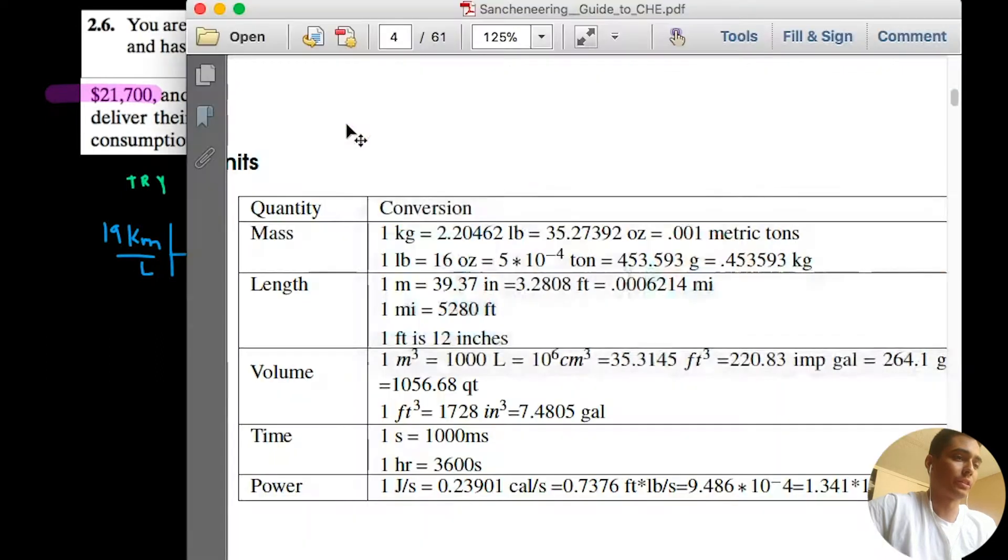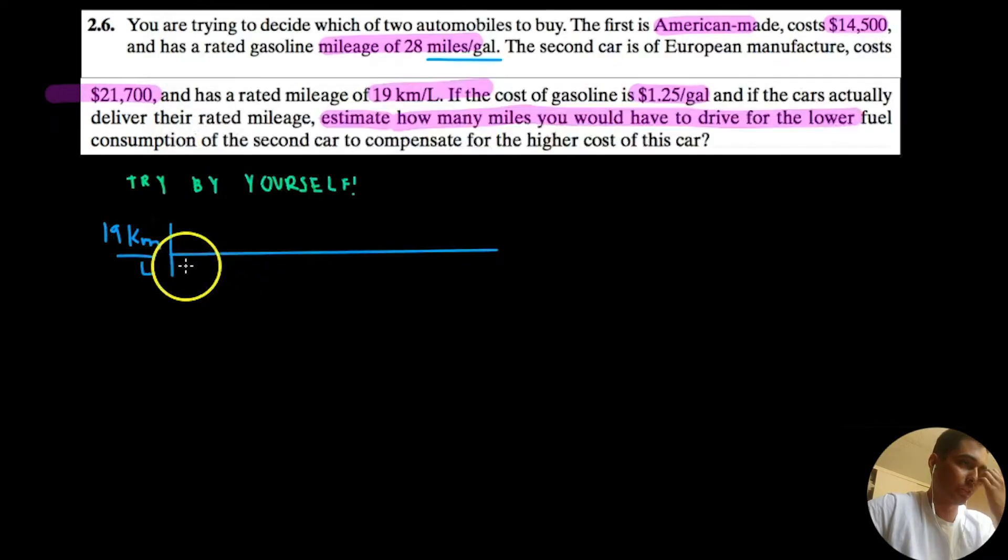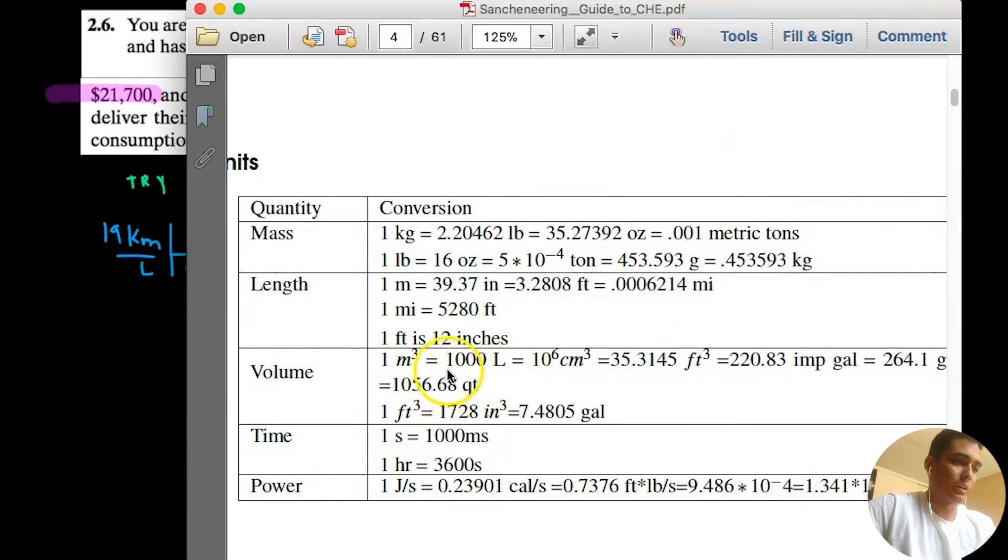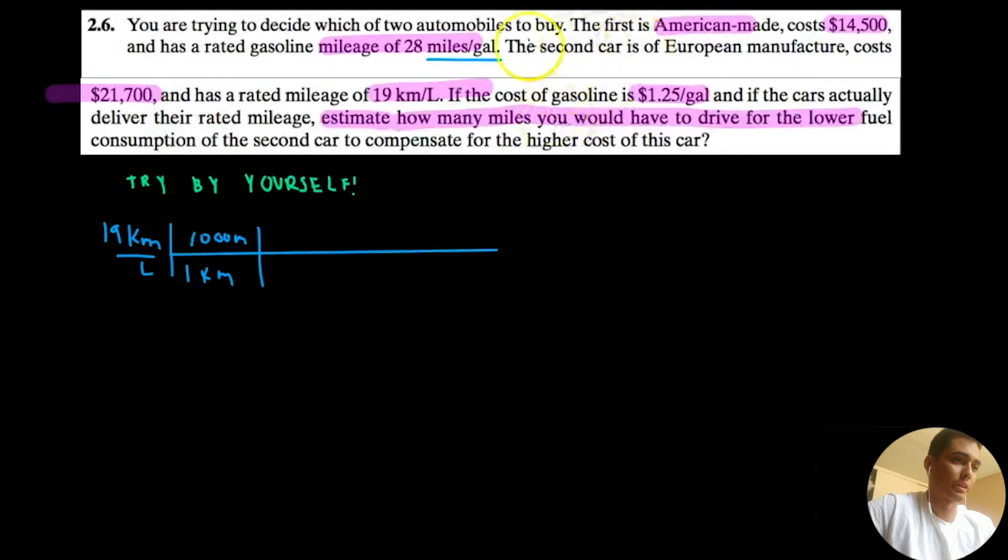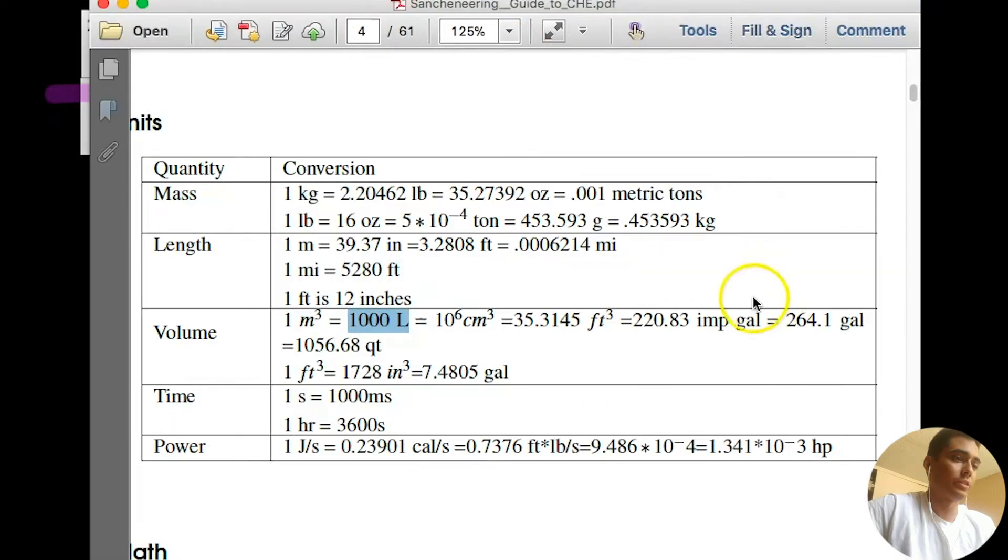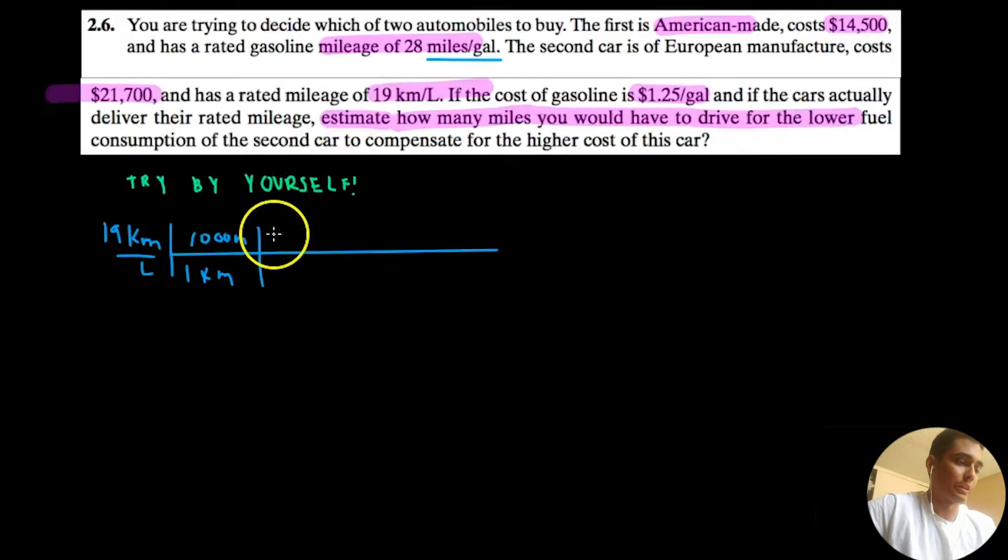Kilometers is going to be length. We need to first convert this to meters, which is going to be 1,000 meters per kilometer. And volume, 1,000 liters is 264 gallons. 1,000 liters on the bottom, so now let's do the top. 1,000 liters cancel, cancel.